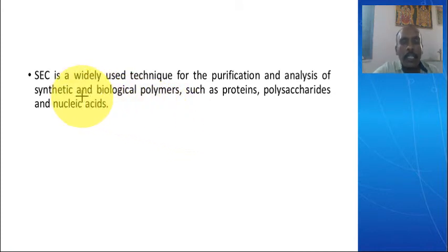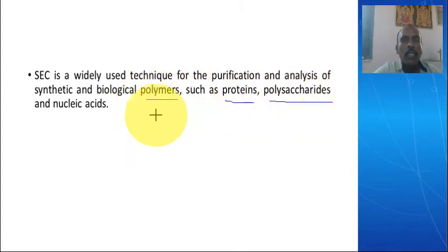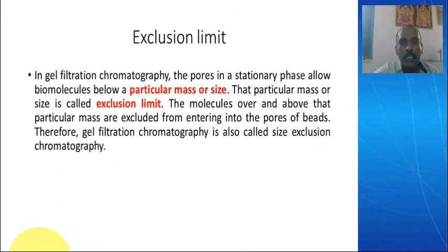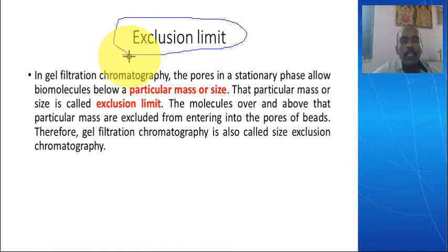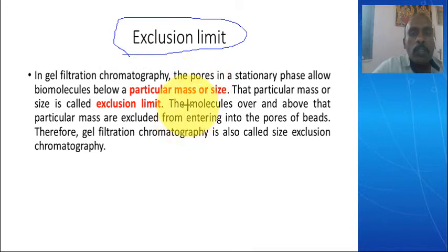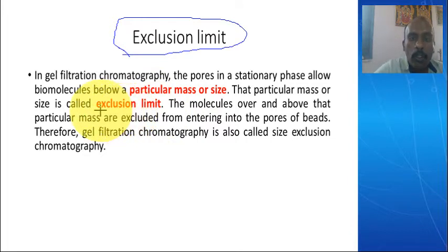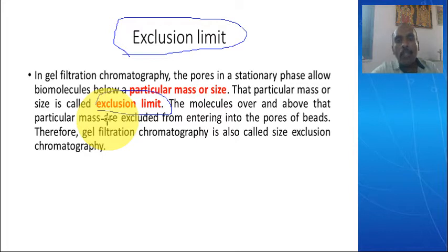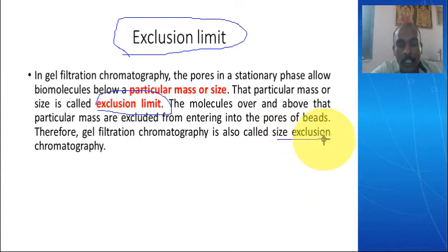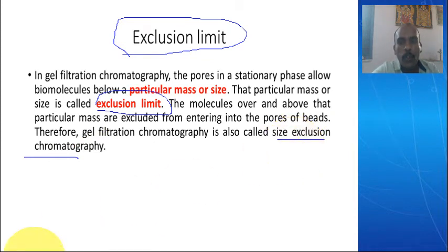This technique is mainly used to isolate biological polymers such as proteins, polysaccharides, and nucleic acids including mRNA and tRNA. The exclusion limit refers to the maximum size of particles that the beads can allow. If the molecular size exceeds this limit, the molecule is not allowed into the bead. This is termed the exclusion limit — macromolecules are excluded — and that is why it is termed exclusion chromatography.